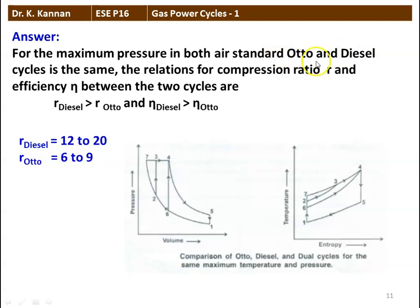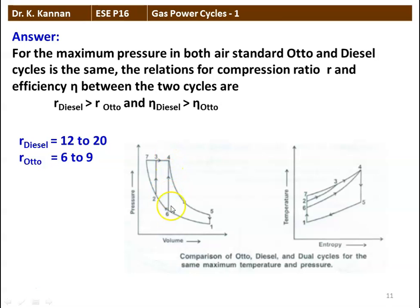Looking at the PV diagram to confirm: the compression ratio of diesel cycle typically varies between 12 to 20, while the Otto cycle varies between 6 to 9, so diesel has a higher compression ratio. In the PV diagram, the Otto cycle is 1, 6, 4, 5 (constant volume heat addition) and the diesel cycle is 1, 7, 4, 5. When maximum pressure is the same, the work done in the diesel cycle is more than the Otto cycle, so the efficiency is higher for the diesel cycle.